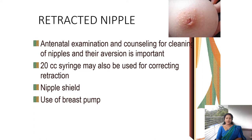The first topic is retracted nipple. In this picture you can see the nipple is retracted inward — it is not protruding outside. If you perform a proper antenatal examination during the antenatal period itself, we can identify this problem and correct it. We can counsel the mother to do nipple massage and stimulate the nipple, or manually pull it out. Otherwise, using a 20 ml syringe, you can aspirate outward — the negative pressure will cause the nipple to protrude.